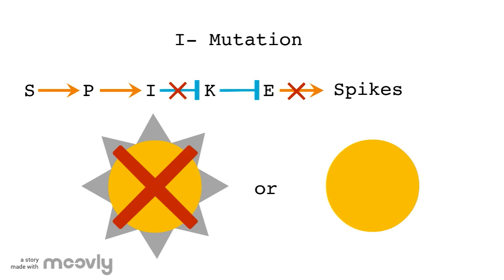This allows us to recognize that a lack of functional I genes has the same result as the lack of functional P genes. The produced cells will be smooth.